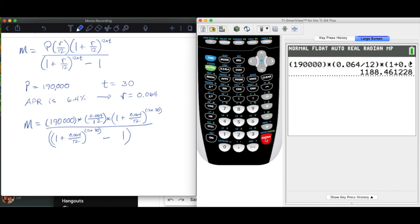And sure enough, we have that number that came from inside the book, approximately. And it's $1,188.46.